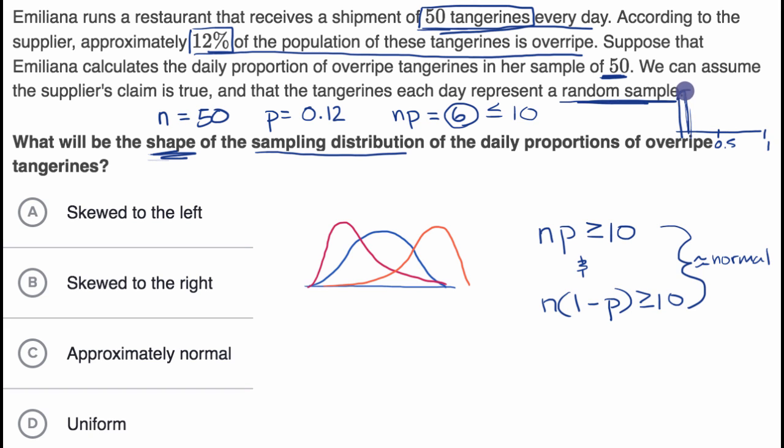And so you're going to have it really high over there, and then it's going to be skewed to the right. You're going to have a big long tail. So this is going to be skewed to the right.